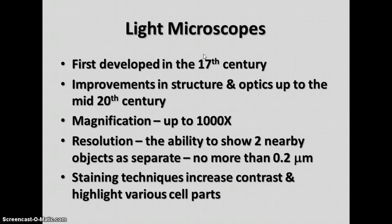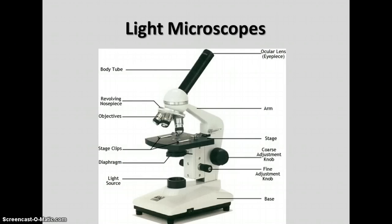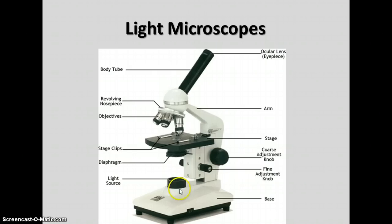The limit of what you can see is about 1,000 to 1,500 times magnification. A general light microscope today looks very similar to the ones in lab. It has an eyepiece, a body tube, various objectives with different magnification lenses, stage clips to hold your slide, a stage, a diaphragm to vary the amount of light, knobs for focusing adjustments, and a light source.